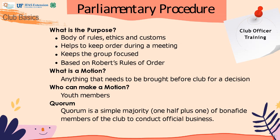Within parliamentary procedure, youth members can make a motion — anything that needs to be brought before a club for a decision. In order to make decisions within a club meeting, a quorum is needed. A quorum would include one-half plus one of the bona fide members of the 4-H club. For instance, if a 4-H club has 50 members, a quorum would be 26 members in order for the vote to be legitimate.